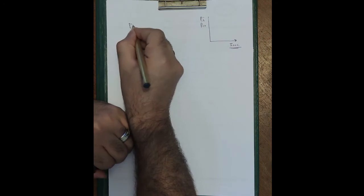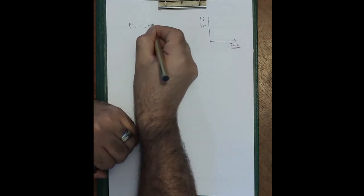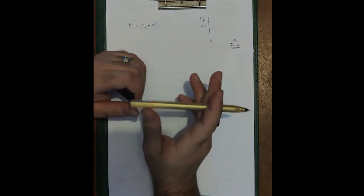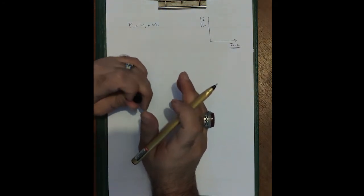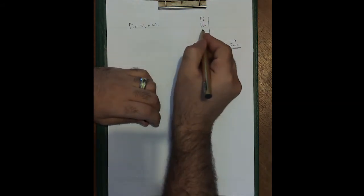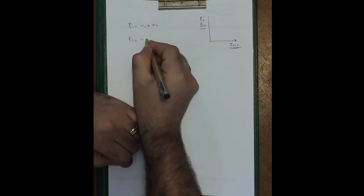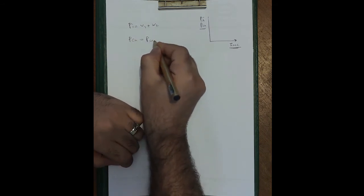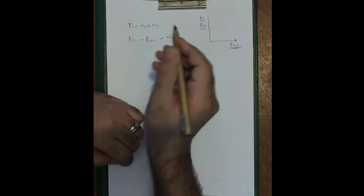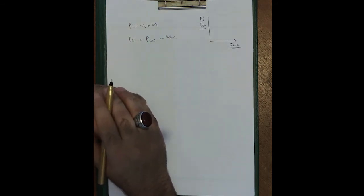The power iron is Watt meter 1 plus Watt meter 2. The copper losses are the same as the power secondary, or the Watt meter secondary reading.